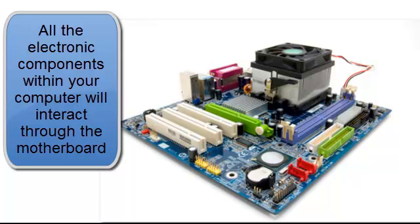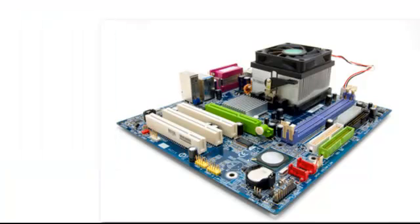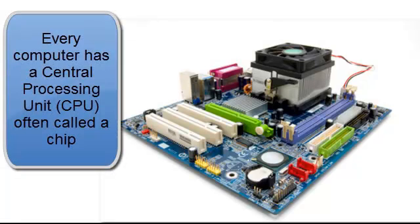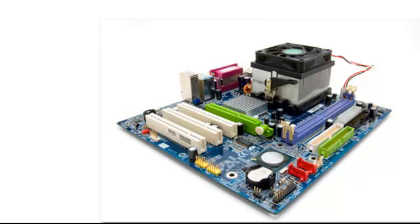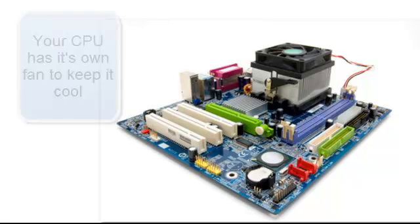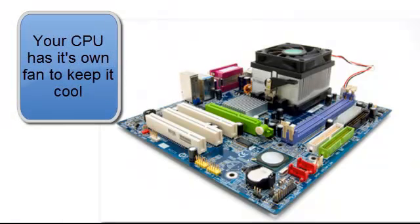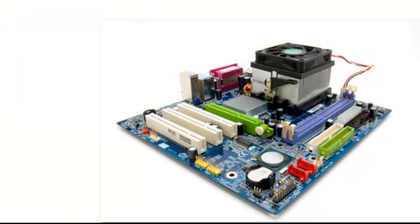The motherboard connects everything, including the power supply, a graphics card, sound card, memory, and what's known as the central processing unit. The central processing unit, or processor for short, is often referred to as the chip. The chip processes everything through your computer and makes it run. It works very hard so it gets very hot, and it's installed with a fan over the top to cool it down — that is the fan you can hear at times while running your computer.